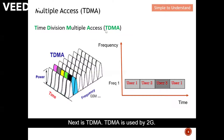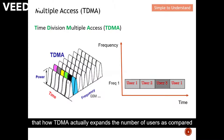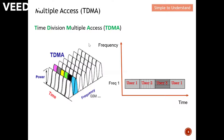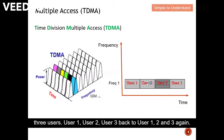Next is TDMA, which is used by 2G. Looking at this diagram, at one frequency it is further divided among more users — user one, two, three, four, five, and six. From the 2D diagram you can see how TDMA expands the number of users compared to FDMA. At one frequency it is subdivided into three users: user one, user two, user three, cycling back again.